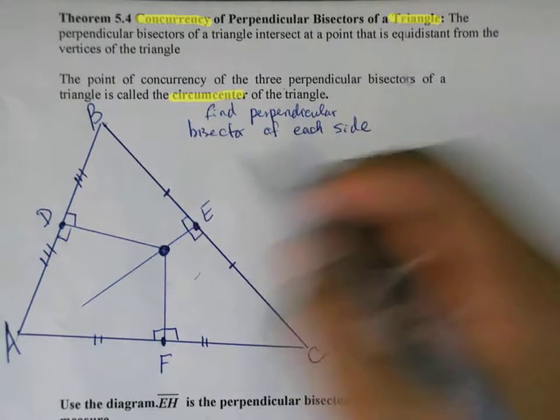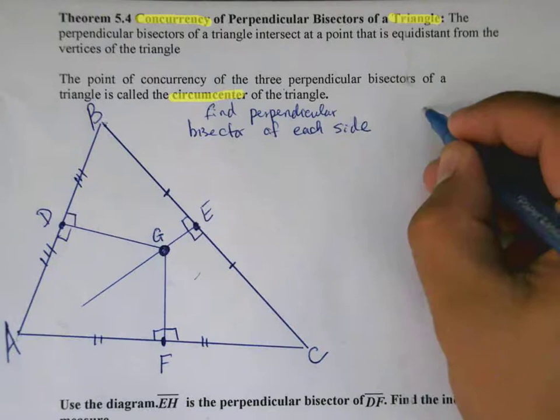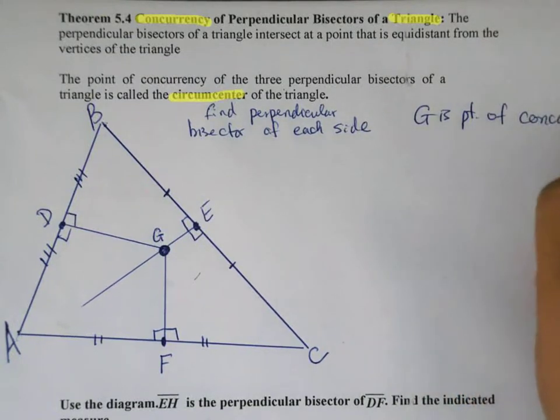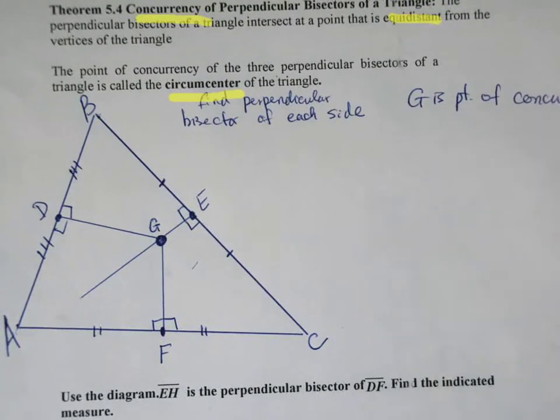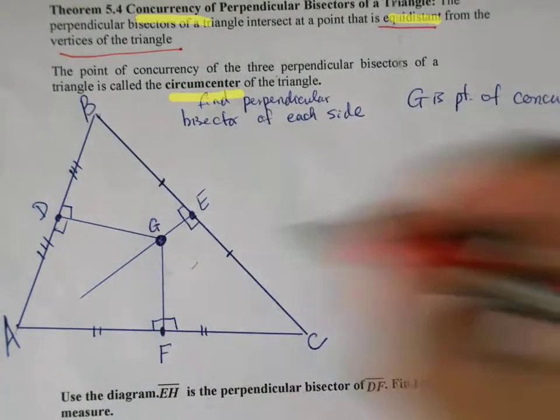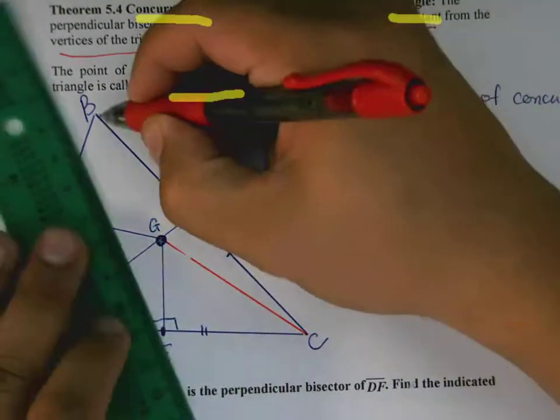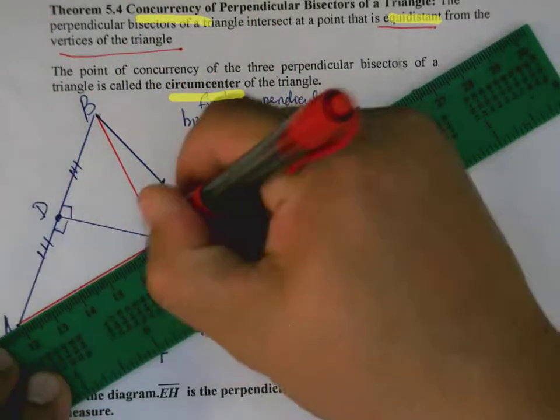G is the point of concurrency. And what this says is that the distance between, it is equidistant from the vertices of the triangle. So that means if I take the point G and go to C, and then from G and go to B, and then go from G and go to A, that all three of these red line segments are going to be congruent.